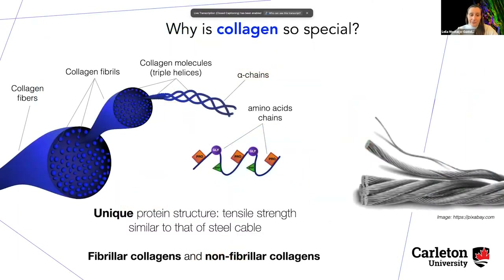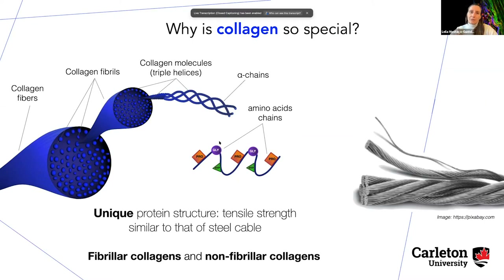What makes collagen very special is that it has a very unique structure. We have what's called the collagen fiber — imagine a very thick rope. To make the structure of the rope, we have small threads, and collagen has the same structure. Inside the collagen fibers, we have what's called the collagen fibrils. Inside the fibrils, we find a triple helix structure — just like DNA — where amino acid chains form this very unique arrangement. This provides collagen the special property of being a very strong protein, with tensile strength similar to a steel cable.